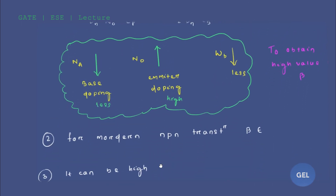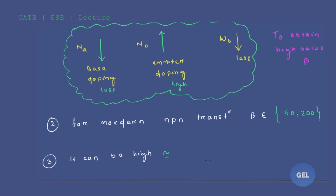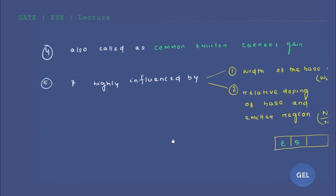For modern NPN transistors, the beta value lies between 50 to 200. It can also be as high as around 1000 (10 to the power 3) for special devices.